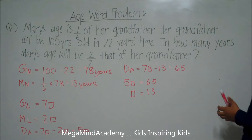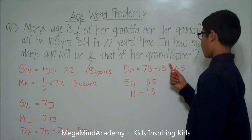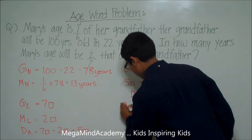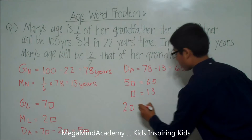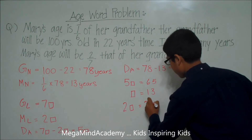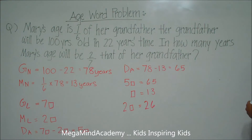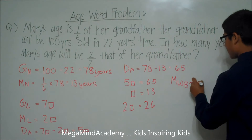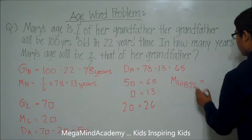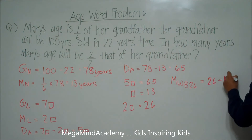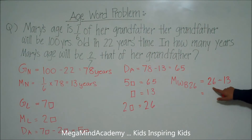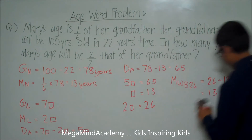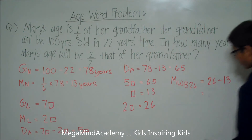Now we need to find out in how many years will Mary's age be two-sevenths that of her grandfather's. We know that Mary's age later will be two units. This means that two units is equal to 2 times 13, which is equal to 26. So Mary will be 26 years old in 26 minus 13 years' time, because 26 is how old she will be, minus 13 which is her current age. This is equal to 13. So Mary will be 26, or two-sevenths of her grandfather's age, in 13 years.